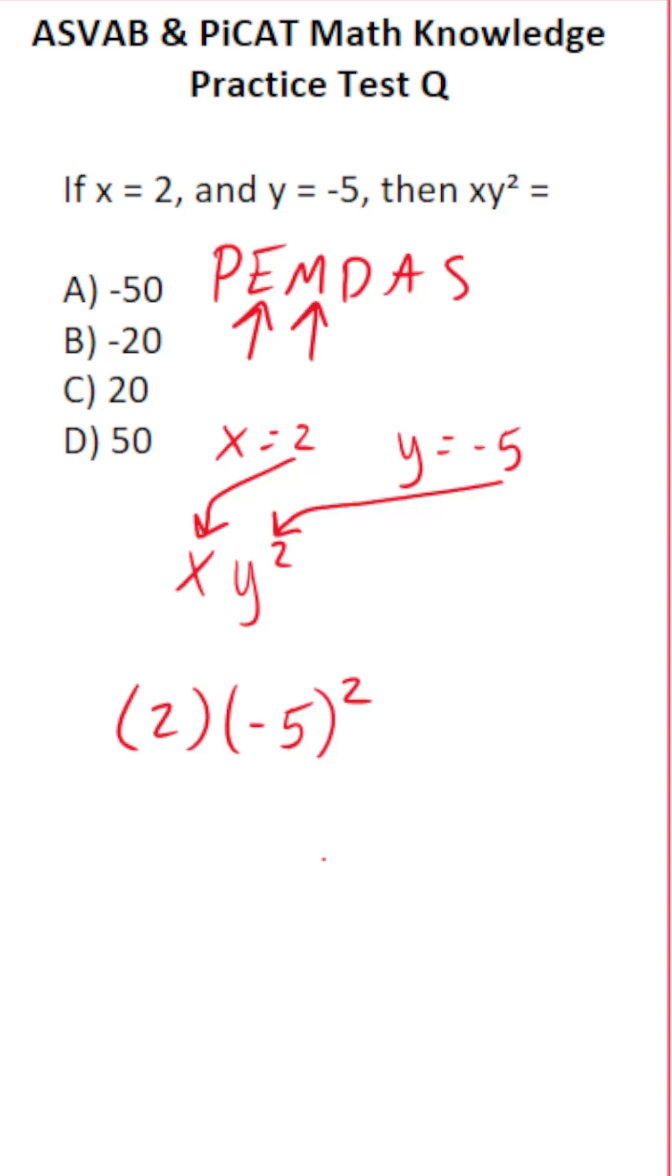So in other words, we've got to work out negative 5 squared. Negative 5 squared is the same thing as negative 5 times negative 5. A negative times a negative is going to be a positive, so negative 5 times negative 5 is going to be positive 25.